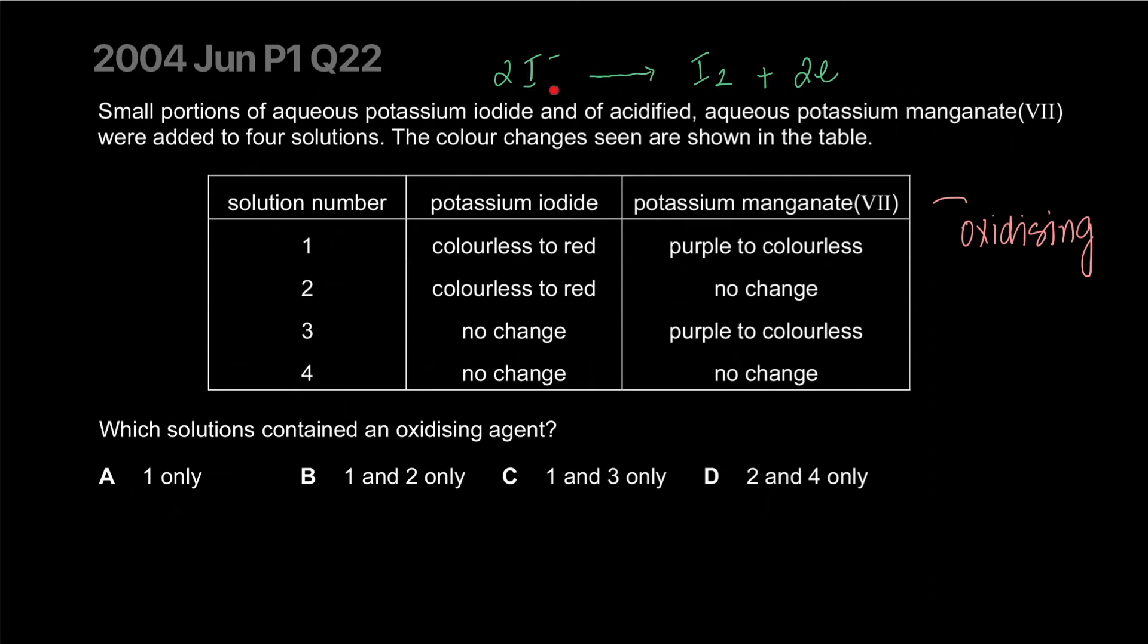It's going to give out two electrons to balance it out. Is this being oxidized or reduced? It's losing electrons. So that's oxidation. Oxidation is loss of electrons. It's going to be oxidized. So essentially, if it's changing color, that's oxidation.